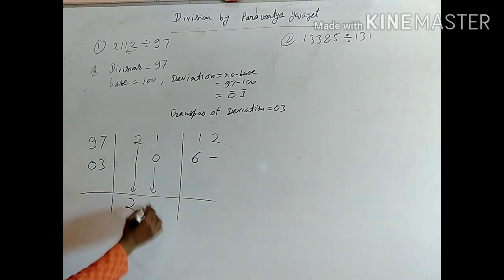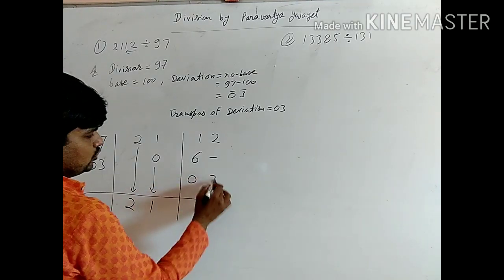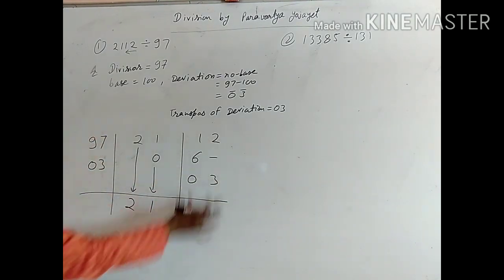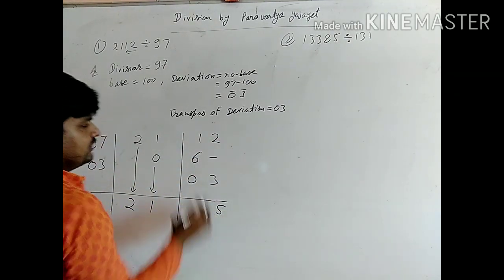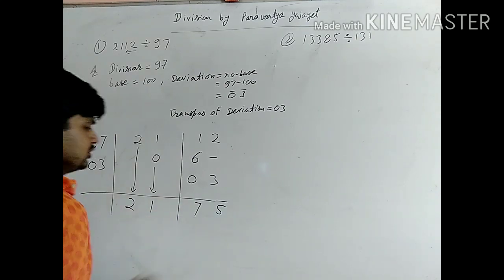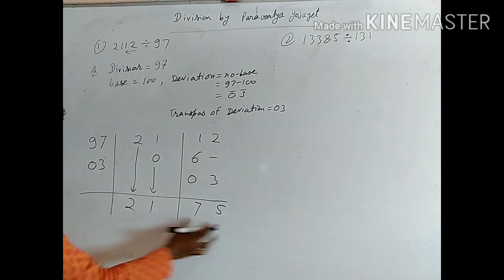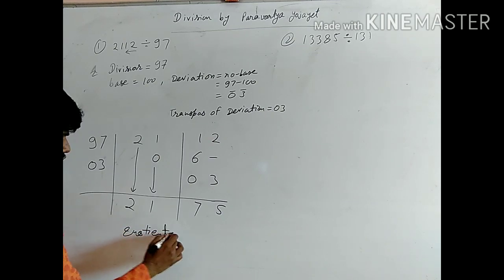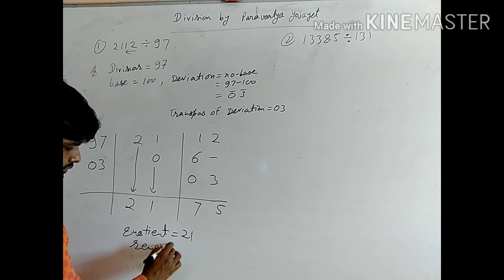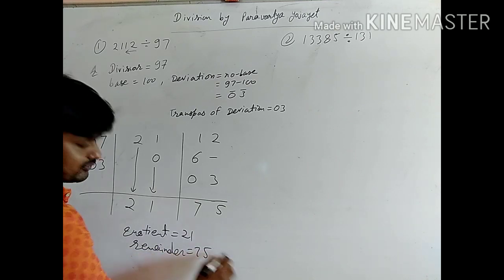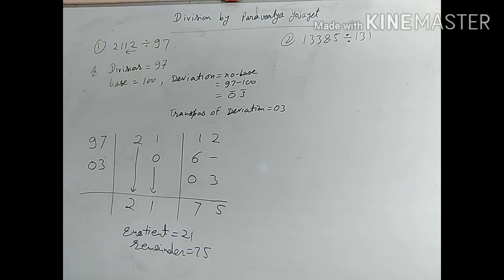1 again, we get 03. Now remainder and this is our quotient. Quotient is 21 and remainder is 75. Remainder is 75.